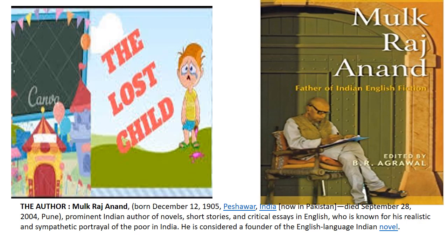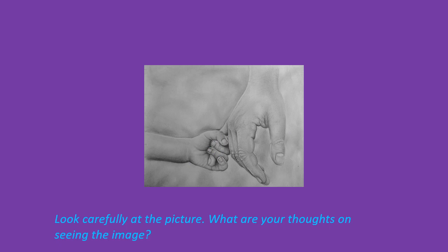Today we are going to do a lesson: 'The Lost Child.' This is the first lesson in your supplementary reader. It's written by Mulkraj Anand, one of the most famous writers in Indian fiction in English. He is supposed to be the father of Indian writing in English.